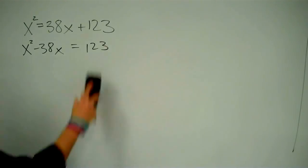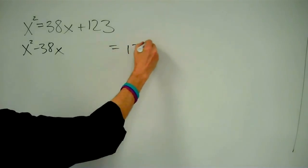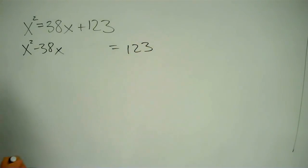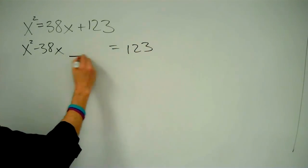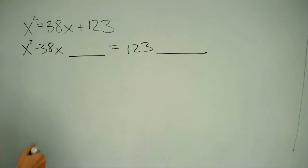And actually, let me scoot this over a little bit and leave a gap here. Because what I want to do is figure out what to add to both sides of my equation to make a perfect square on the left.